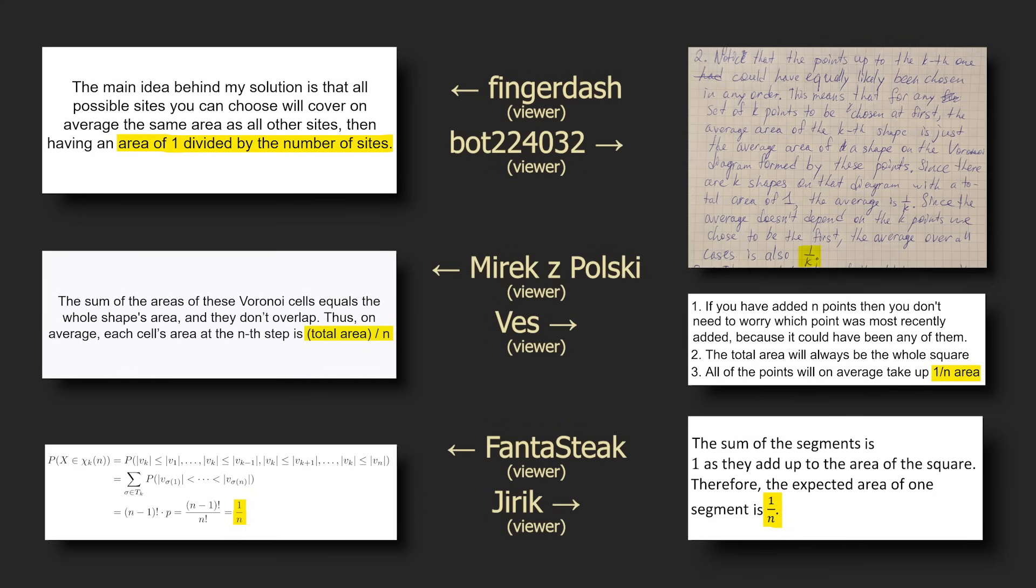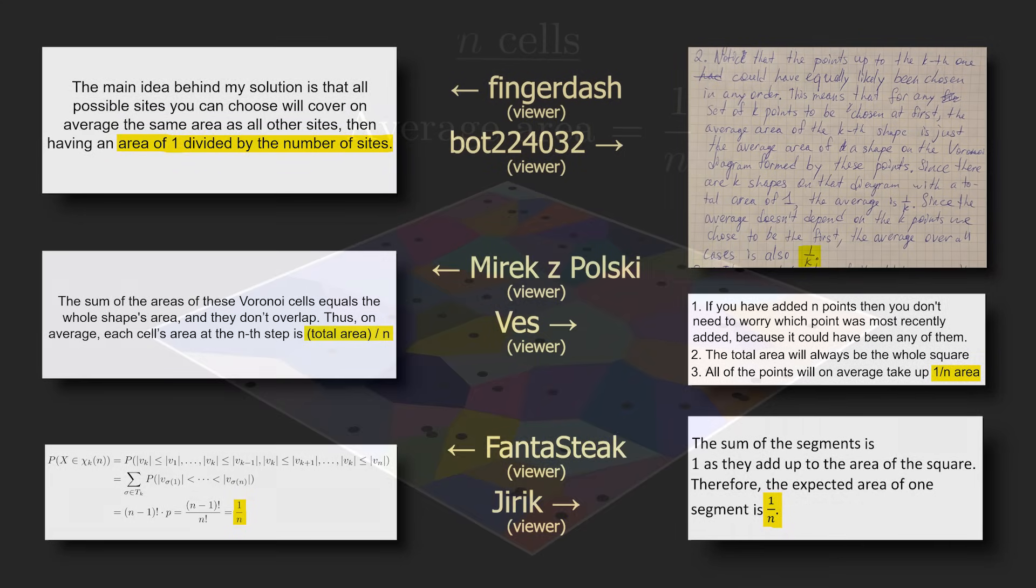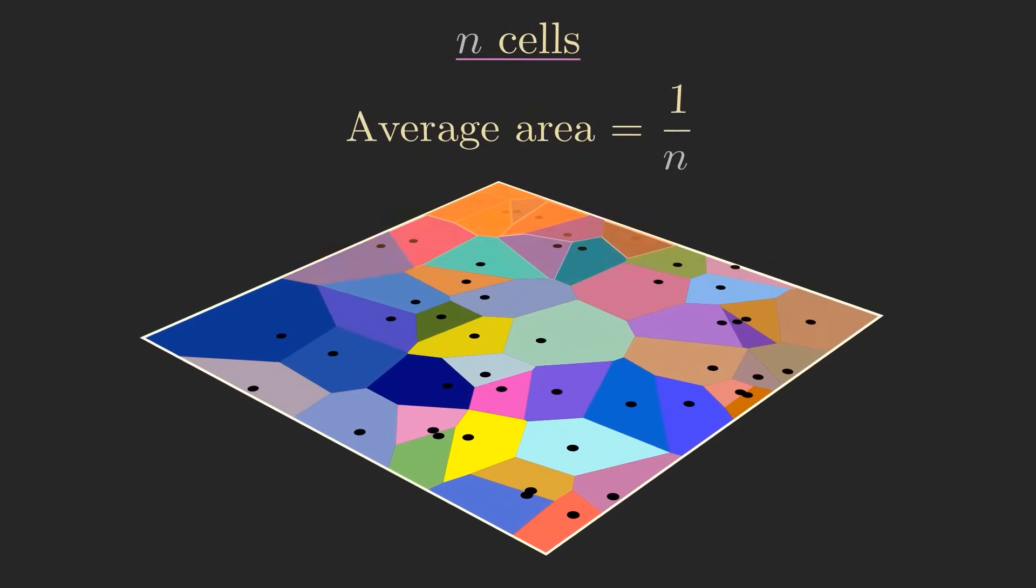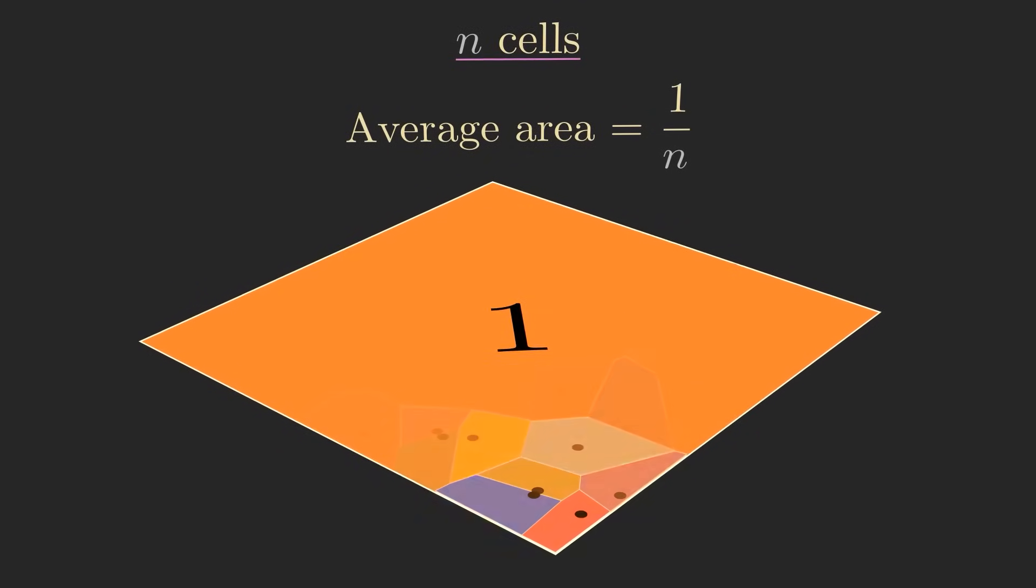We're already making some good progress, but there's an issue. For the case of area, we know that all the areas together add up to 1, the area of the unit square.